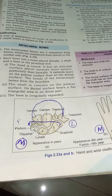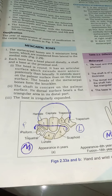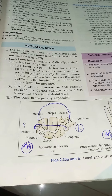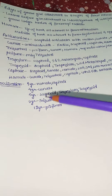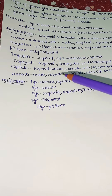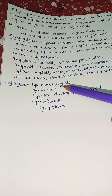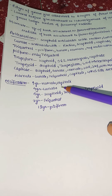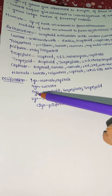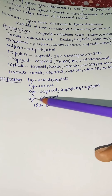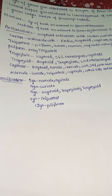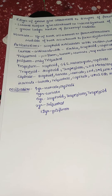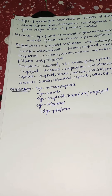Finally, regarding ossification: at the first year, hamate and capitate start appearing. In the third year, triquetral appears. In the fourth year, lunate appears. In the fifth year, scaphoid appears. This completes the study of the carpal bones.